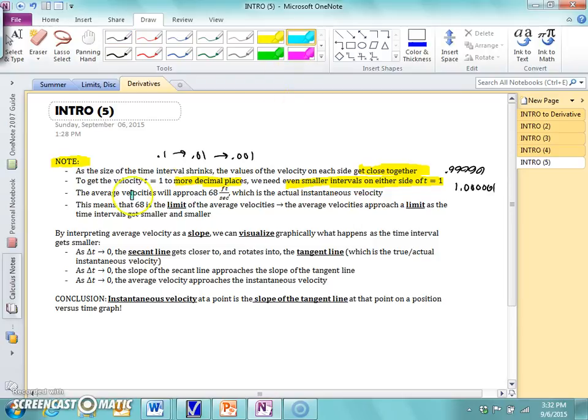The average velocities, this is important here, approach exactly 68, which is the true instantaneous velocity. Because we have numbers approaching as the change in time gets smaller, we can talk about limits here. So 68 is the limit of the average velocities. The average velocities approach a limit as the time interval gets smaller and smaller.